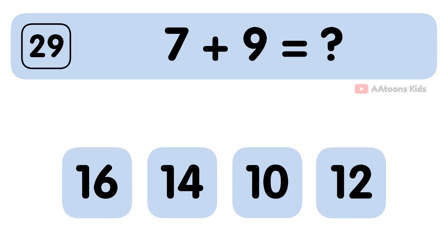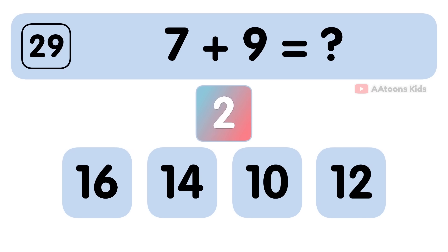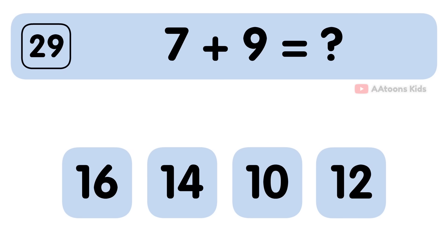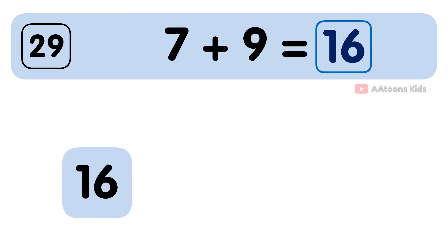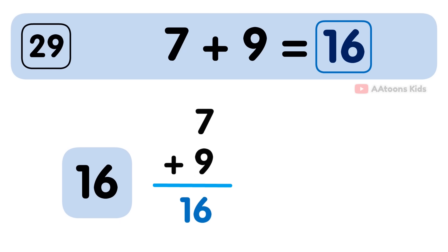7 plus 9 is equal to 16. The answer to 7 plus 9 is 16.